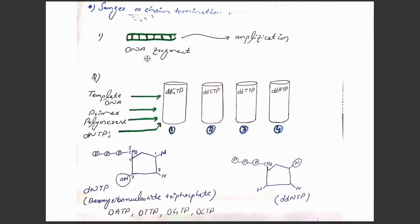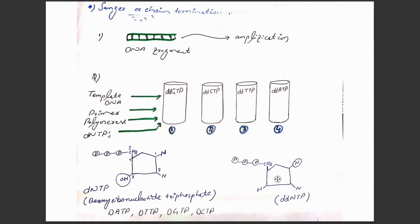In the Sanger method, first we take the desired DNA fragment and using a PCR machine we do amplification to get several copies of the desired DNA. In the second step, we take four tubes — tube one, two, three, and four. To each tube we add equal amounts of DNA, equal amounts of primers, equal amount of polymerase enzyme, and equal amount of deoxyribonucleotide triphosphate. Deoxyribonucleotide triphosphates are the nucleotides like adenine, guanine, cytosine, and thymine. Along with these nucleotides, we also add modified nucleotides called dideoxyribonucleotide triphosphates (ddNTPs).